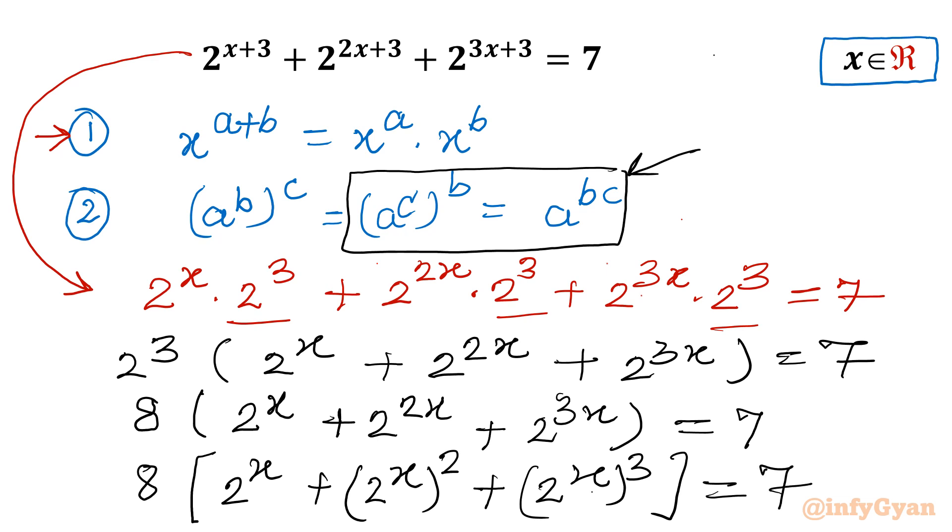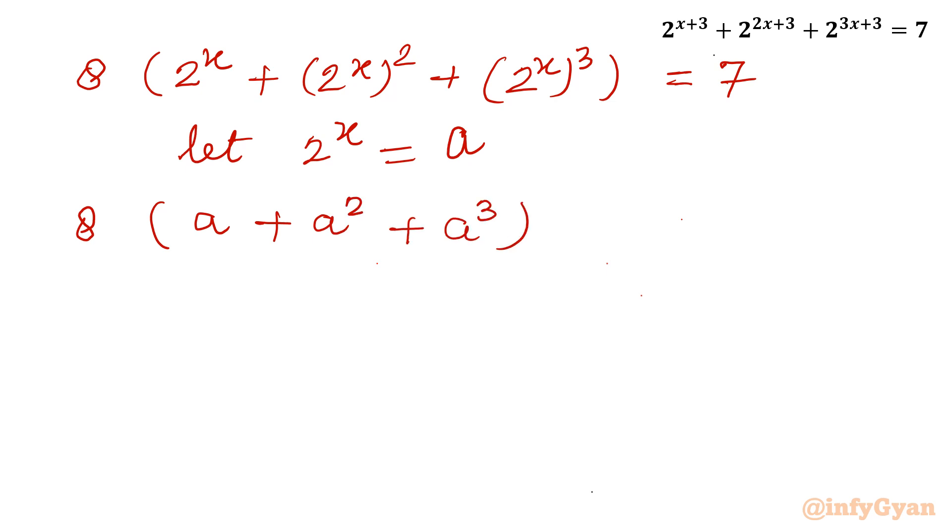Now you can easily see it is substitution time. We will substitute 2^x = a. So I will write 8 times in bracket 2^x + (2^x)^2 + (2^x)^3 = 7. So I will write 8 times in bracket a + a^2 + a^3 = 7. Let us multiply with 8. So I will be writing in descending order 8a^3 + 8a^2 + 8a - 7 = 0.